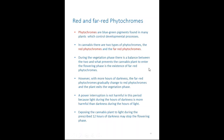What happens during a power interruption? During the 12 hours of light, a power interruption of one, two, or three hours is not a problem. But if during the dark hours the plants are suddenly exposed to light, that has a bad effect — it's more sensitive to exit the flowering stage at that point. There is no harm if darkness occurs during light hours, but exposing the cannabis plant to light during the prescribed 12 hours of darkness may stop the flowering phase.